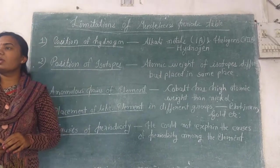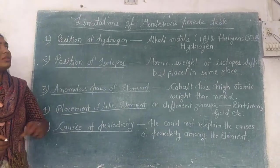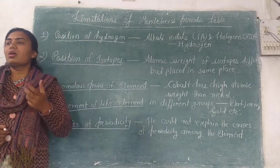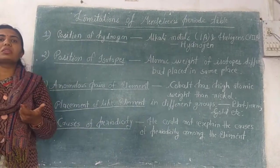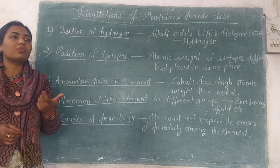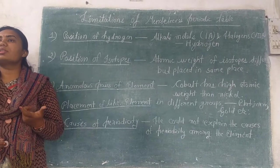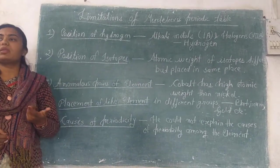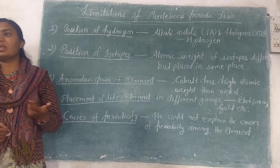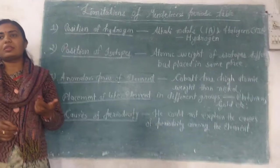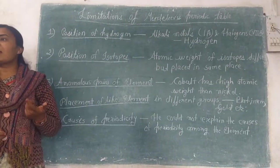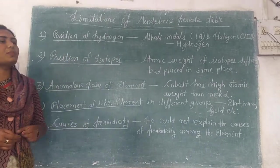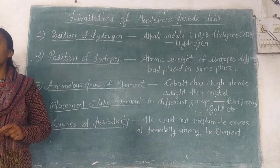Today we will discuss the limitations of Mendeleev's periodic table. Limitation means the places where Mendeleev's periodic table fails — that is, having a kind of failure in it. So the first one is the position of hydrogen.